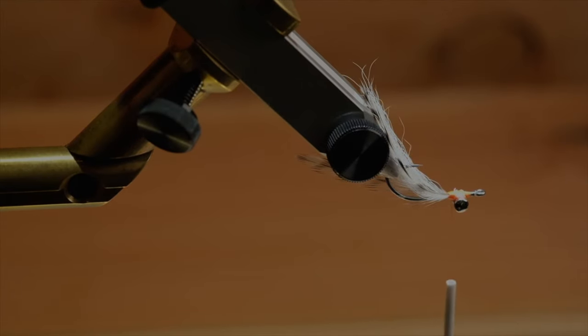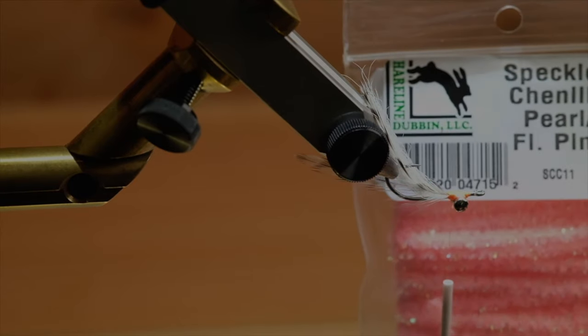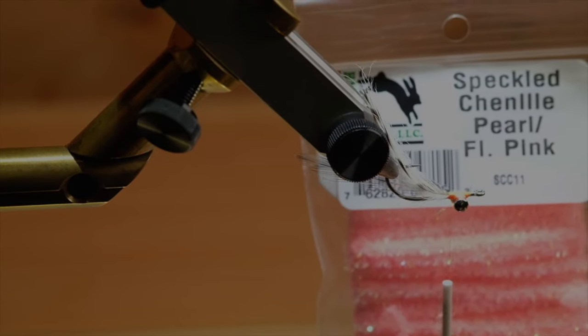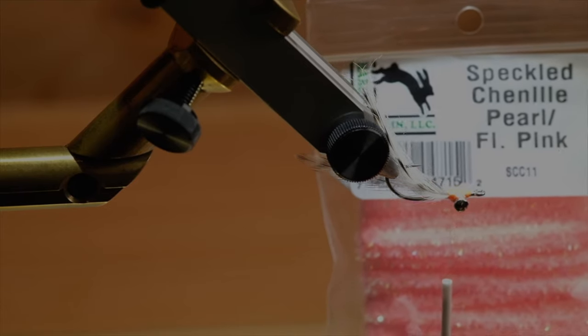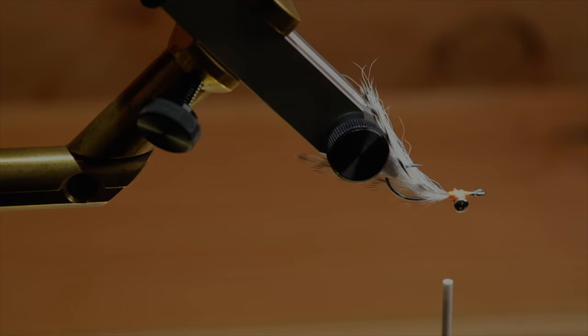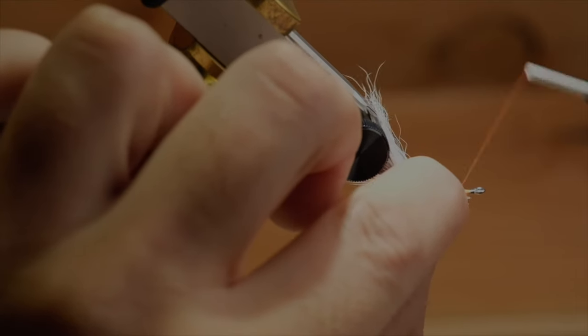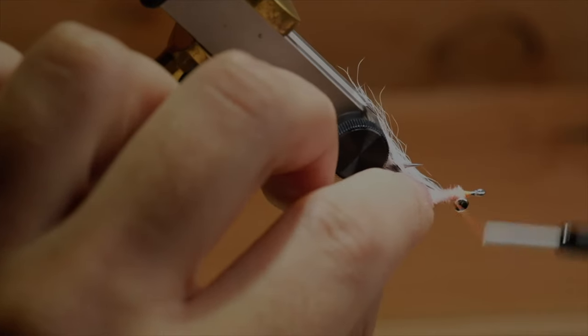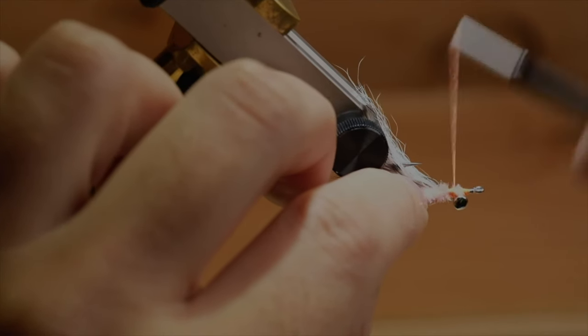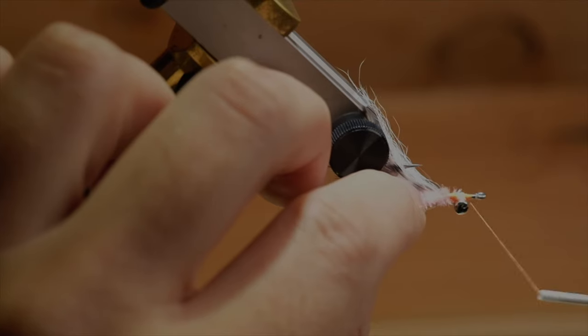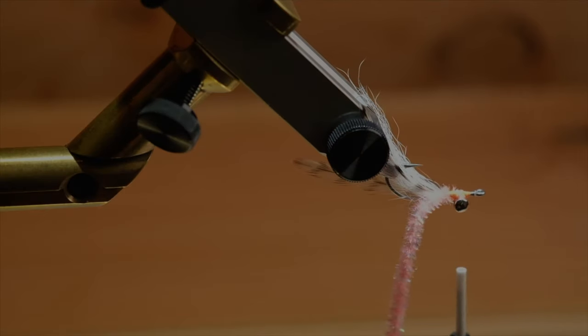Now for the final part. This is the reason why I don't use any crystal flash in my wing. I like to use this speckled chenille. The Pearl Fleur Pink variety. I'll use that for the head. It actually has some flash in there. What I do is I strip off just a little bit. Tie it in.